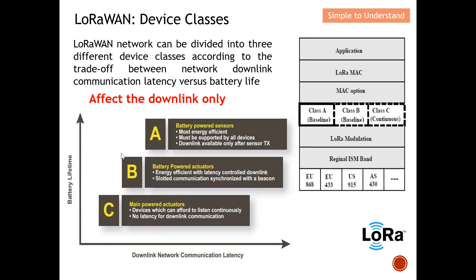Looking at this diagram, you can see this represents latency — the amount of time or delay to send a message — versus battery lifetime. Class A has the longest battery lifetime but the longest delay to send a message. Class C has the least battery lifetime but the best latency, meaning the shortest delay to send a message. Class B is in between Class A and Class C.